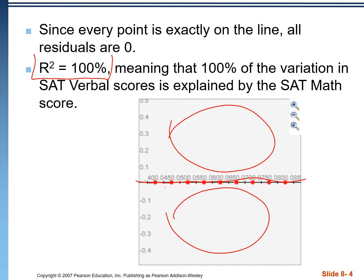The r-squared is just the r value squared. We had 1.0 for the r value; we square it and write it as a percentage, we get 100%. That means 100% of the variation in SAT verbal scores is explained by SAT math score. In other words, based on these nine scores, if we know a student's math score, we can use it to predict exactly what their verbal score is, because all these points are perfectly in a line.